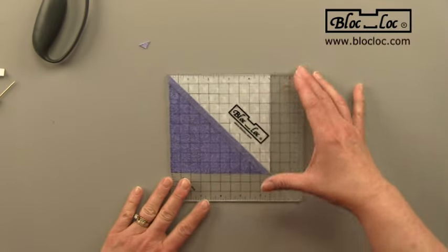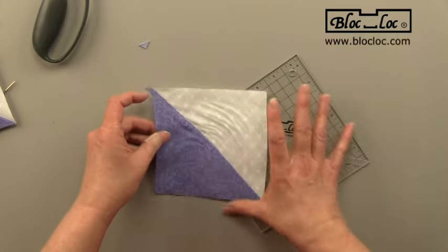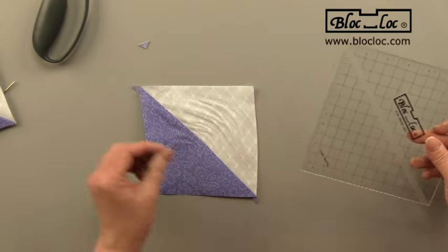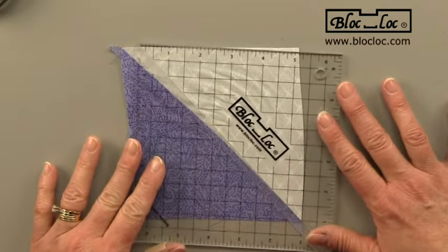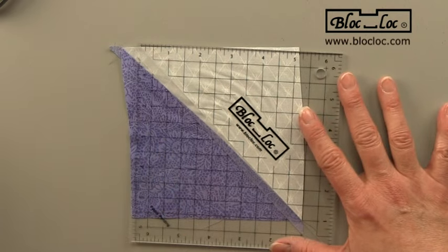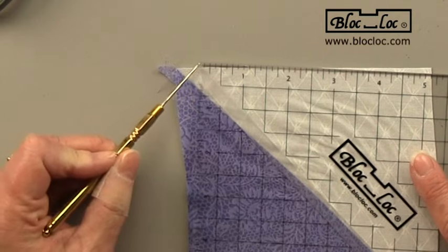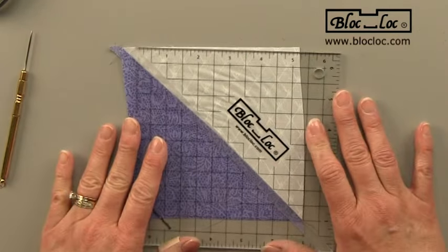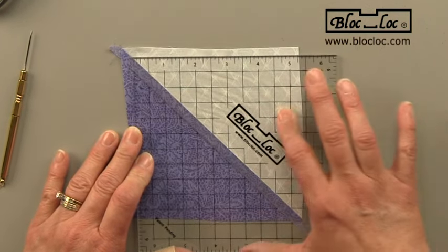One of the great things about Block Lock rulers is that when we have pressed in a curve, and this happens a lot because we're working with bias edges, one of the things that you can do is use the groove in Block Lock and force that seam to go right in the corner. And if you can see right here, the corner of the ruler is not on the seam line. So all I'm going to do is turn this ruler just a little bit and it's going to force that seam to go right in line.